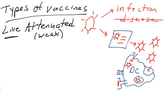A live attenuated vaccine seems to produce the most robust protection because it mimics a natural infection without all the side effects of disease.